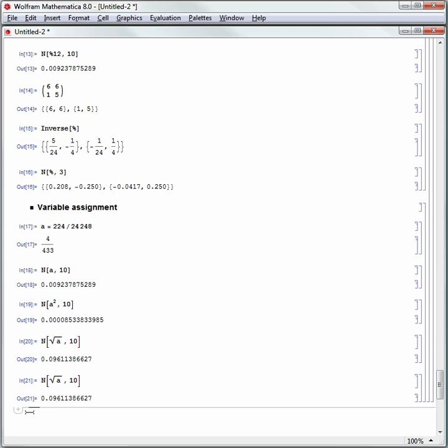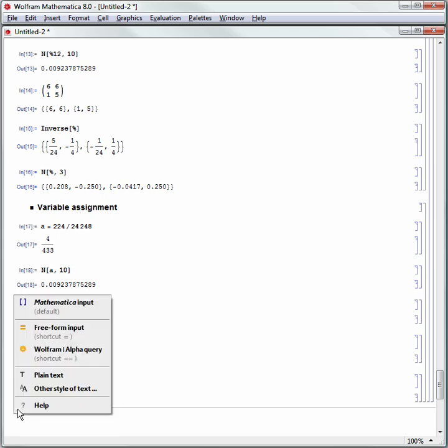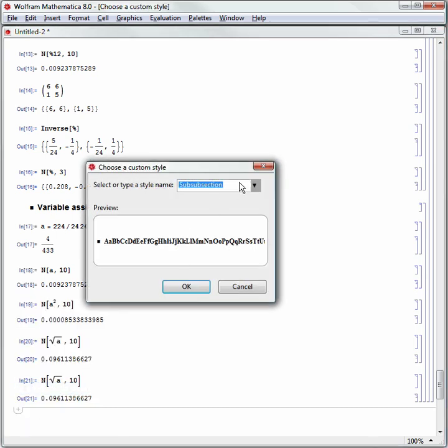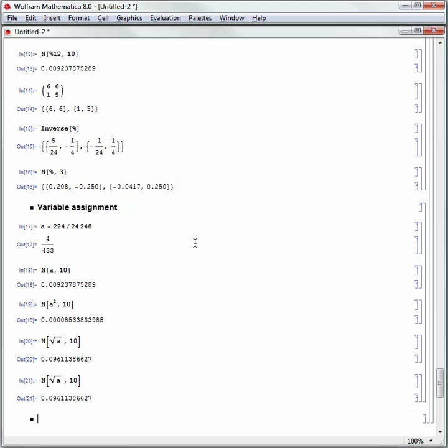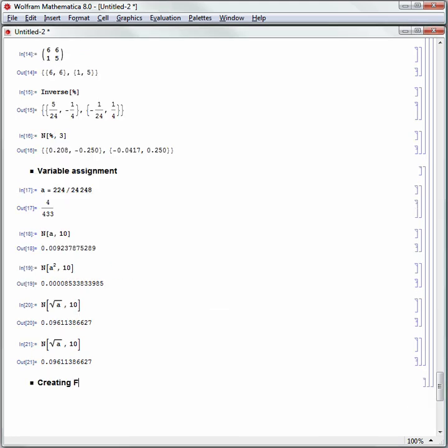Now, let's make another subsection. I'll use the cell insertion assistant this time. We'll say other style of text, and we'll make a subsection. We'll call this creating functions. Hit the down arrow key, or just use the mouse to click below that to make a new horizontal line.